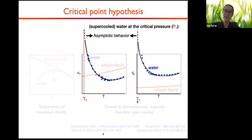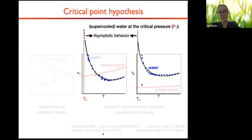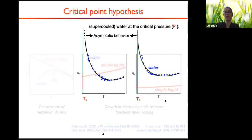According to the critical point hypothesis, there is a pressure where the response functions diverge as temperature decreases. That pressure would be the critical pressure, and the temperature at which the response functions diverge would be the critical temperature. T_C and P_C together as a state point would be the point of singularity — in other words, the critical point. The only little problem is that this argument is impossible to justify or falsify with current experimental technology, because ice nucleates too fast before any measurements can be done in the supercooled liquid. This is one of the reasons why molecular simulations are extremely important in this field — simulations don't necessarily suffer from the same problem. I can keep water as a supercooled liquid in my simulations for a long enough period to make reasonable measurements.